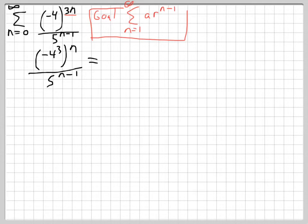Well before we go any further, we have negative 4 to the third power which is negative 64. So that would be to the nth power like that. And we have 5 to the n minus 1.